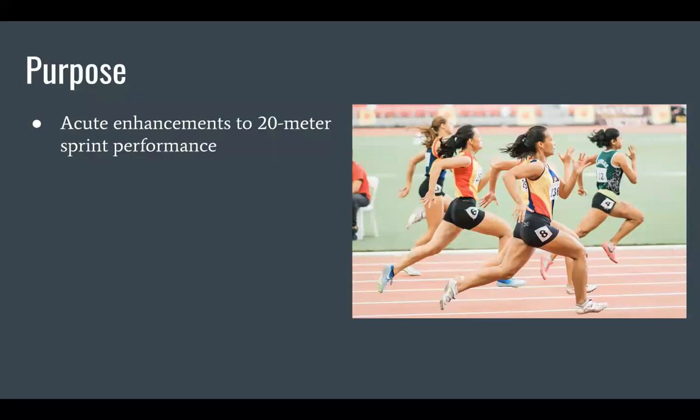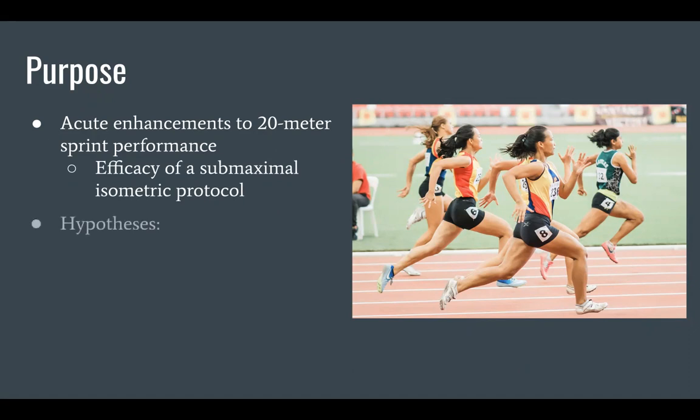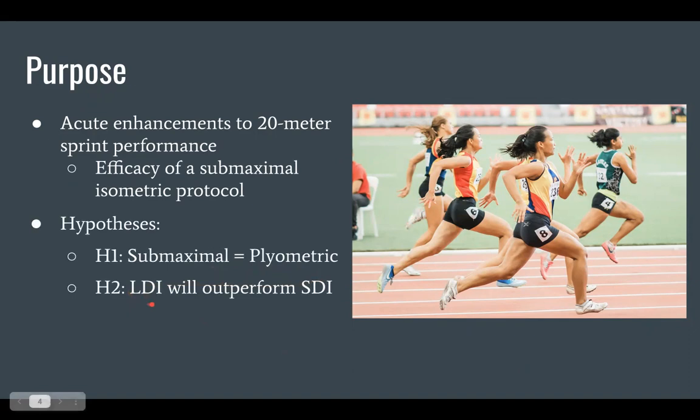Therefore, the purpose of this study is to determine the best way to acutely enhance 20 meter sprinting performance by testing the efficacy of using a submaximal isometric protocol in comparison to a traditional plyometric protocol. The hypotheses established in the study first were to determine that the submaximal protocols were equivalent to the plyometric protocols. Second, that our long duration isometric protocol would be superior to the short duration, and that all experimental protocols would be superior to our control protocol.